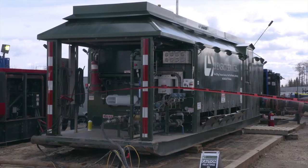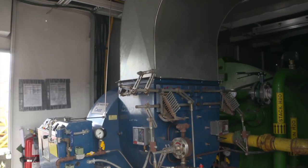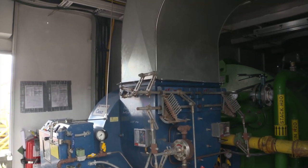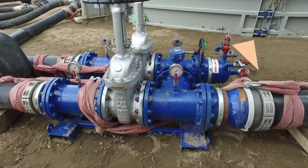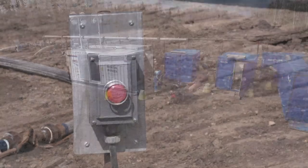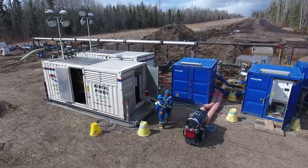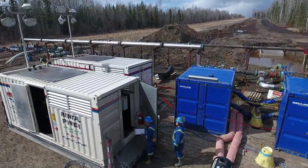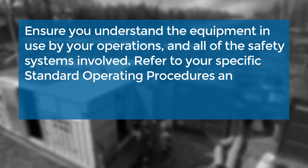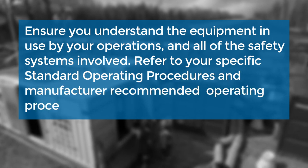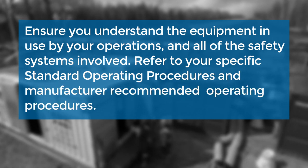There are critical safeguards built into each heating system which need to be maintained and fit for service to ensure safe operation. Some examples are temperature sensors, relief valves, and high temperature shutdowns. Safeguards are in place to maintain proper function and must never be bypassed. Ensure you understand the equipment in use by your operations and all of the safety systems involved. Refer to your specific standard operating procedures and manufacturer-recommended operating procedures.